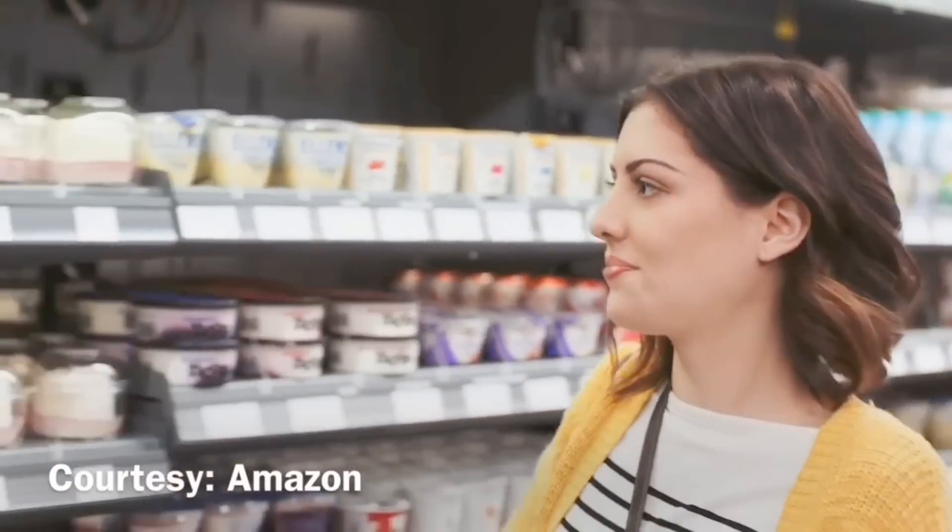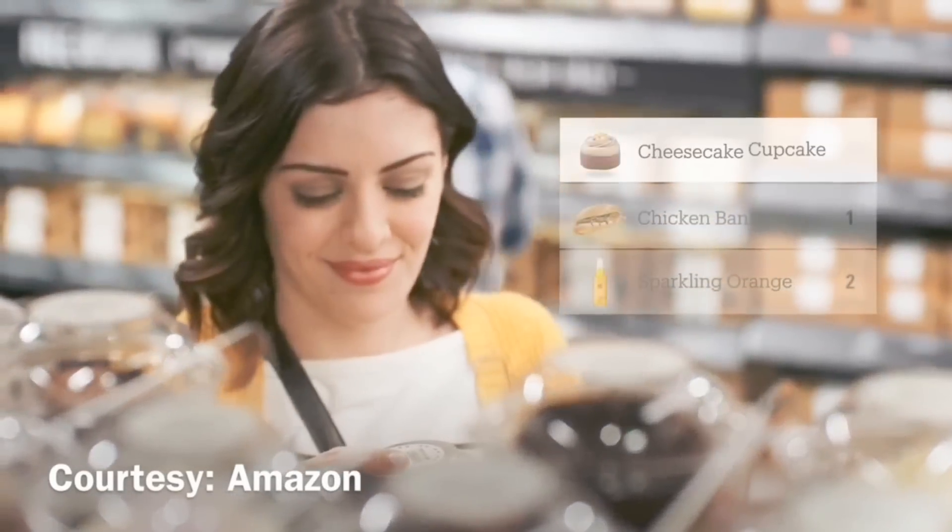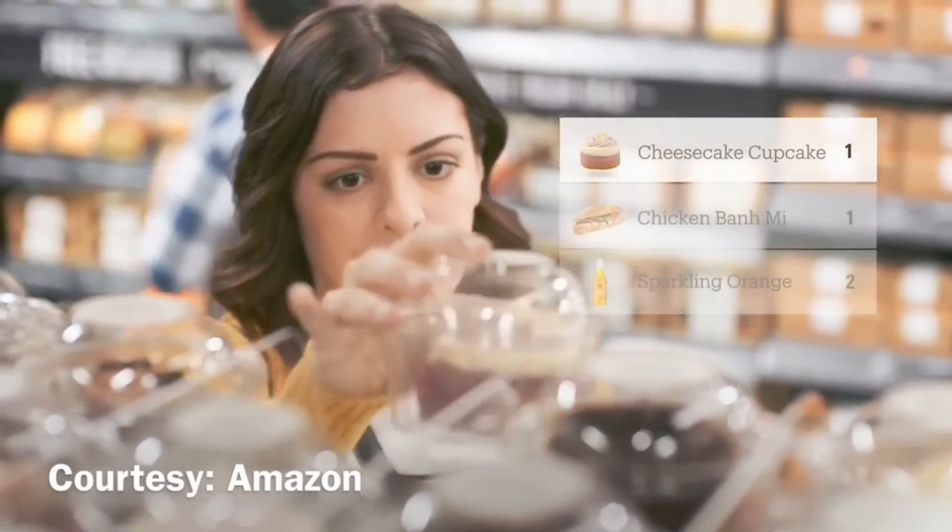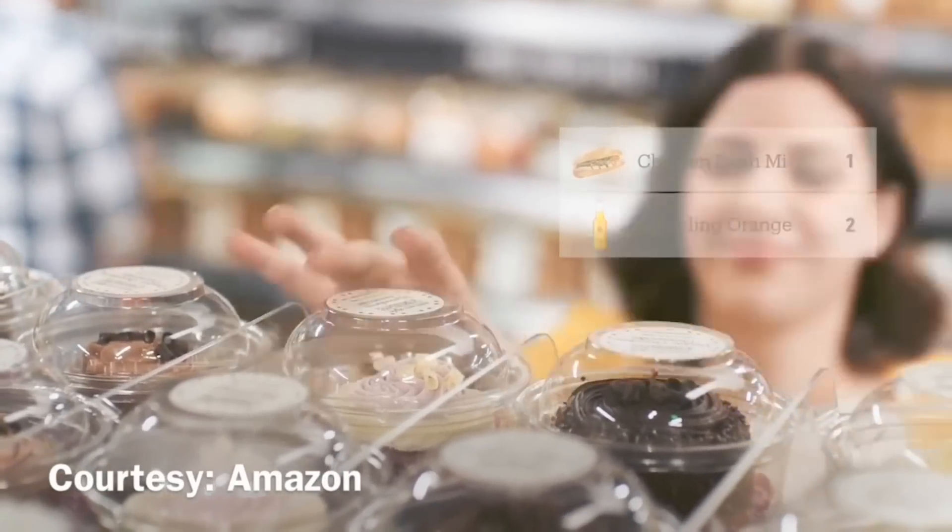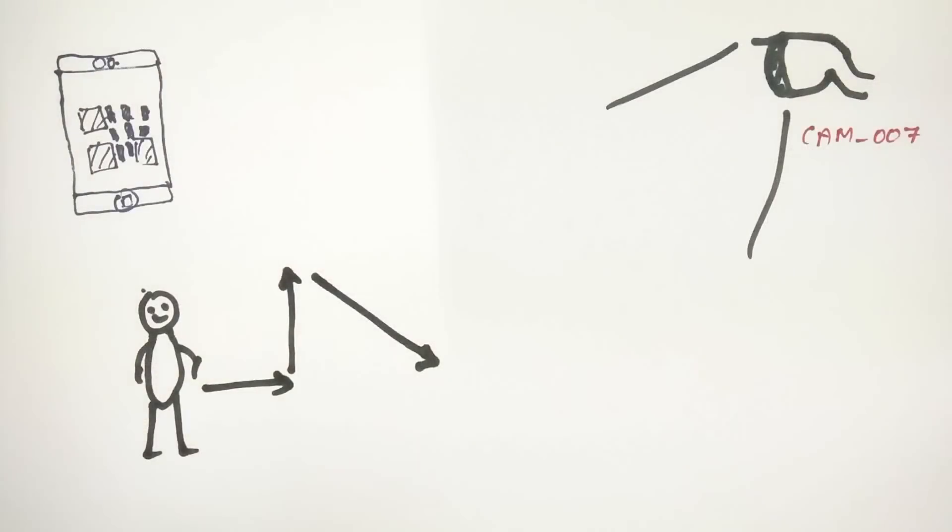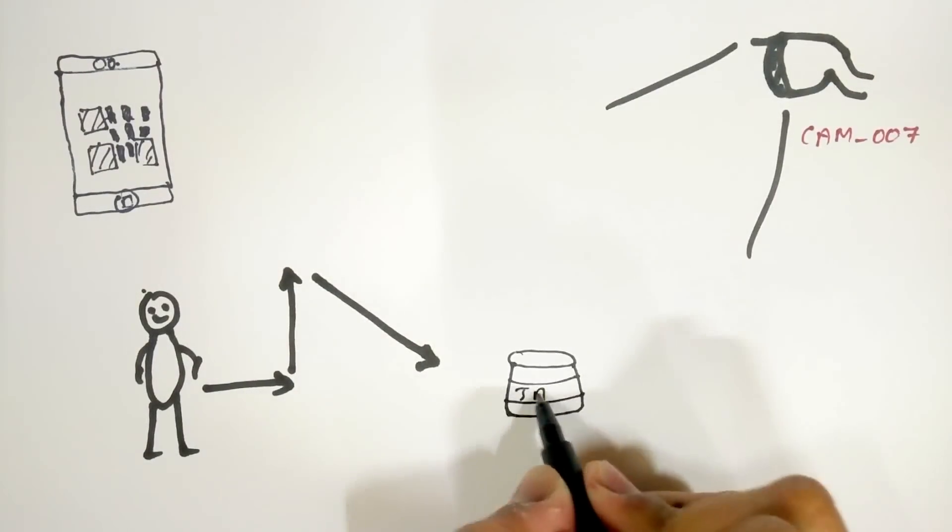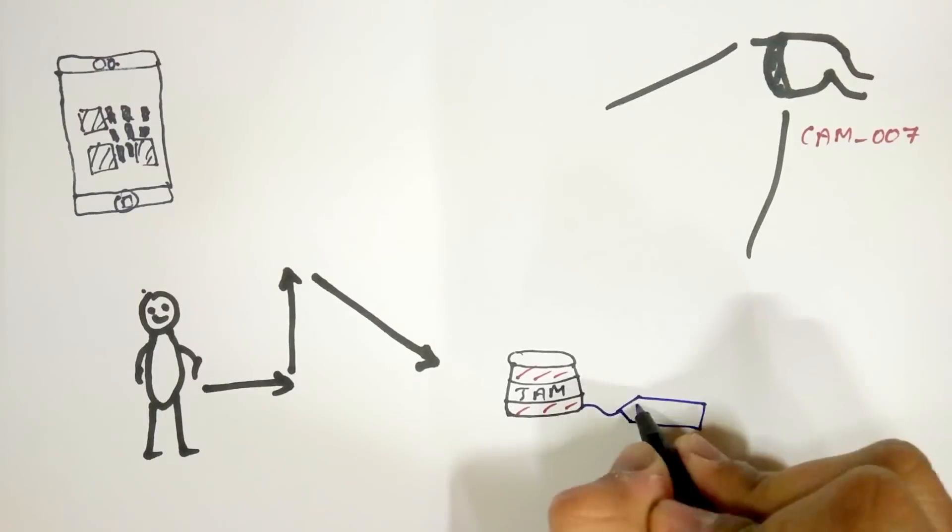There are sensors in the shelves which can detect if an item is picked up or not. These same sensors can detect if you place the item back so that Amazon can charge you accordingly. Amazon may also be using some form of radio frequency identification technology to identify individual items that have been picked and charge you accordingly.